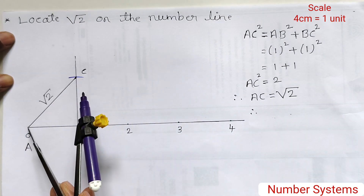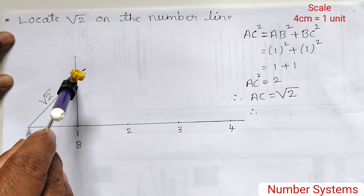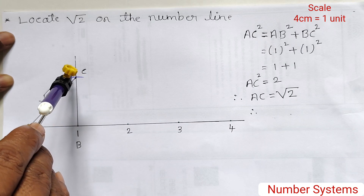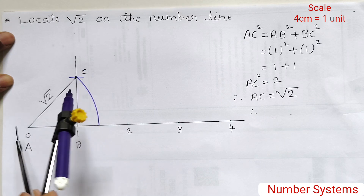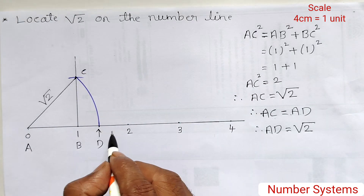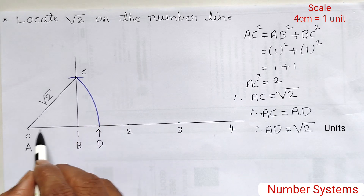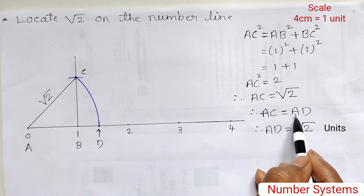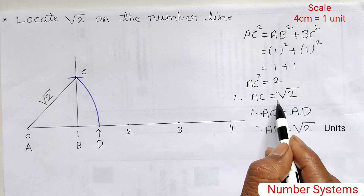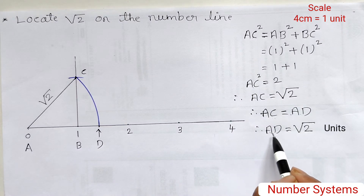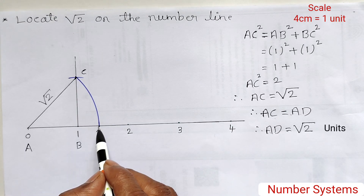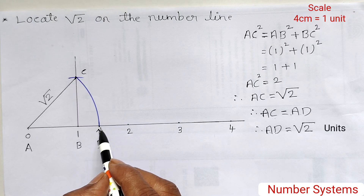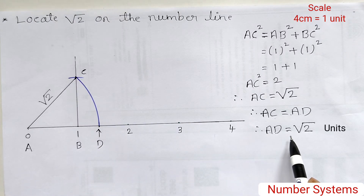Expand the compass from point A to C, then draw an arc from point A — it touches the number line at point D. AC = AD, and the value of AC = √2. Therefore, AD = √2. So from A to point D, the value is √2. We have located the irrational number root 2 on the number line.